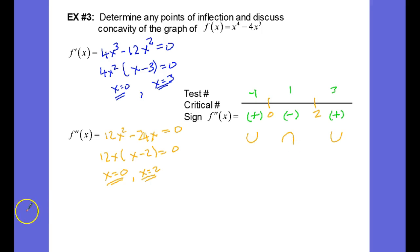So let's see if we can summarize what we know. So f of x is concave up on the intervals from negative infinity to 0, union 2 to infinity.